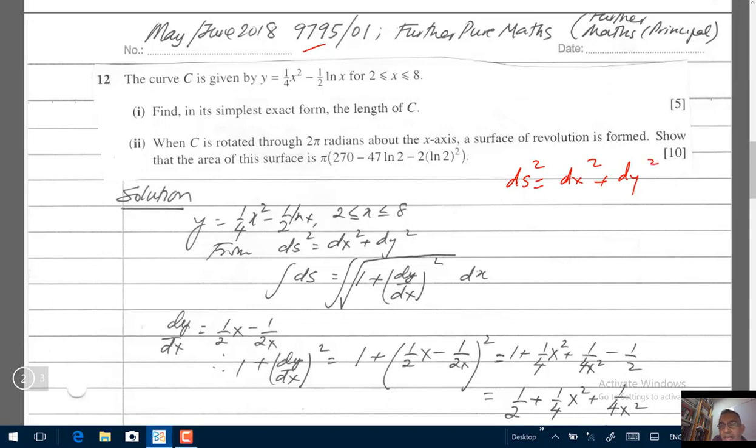We would have learned it using ds squared equals dx squared plus dy squared. This is how you start learning it when we deal with length of a curve. And then when you divide throughout by dx squared, you will get ds over dx all squared would be 1 plus dy dx all squared. Then you take the square root. You will get ds dx equals to the square root of this. This is how we learn it.